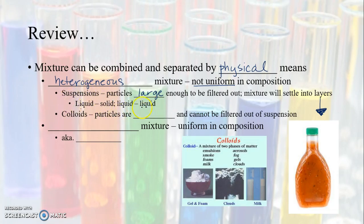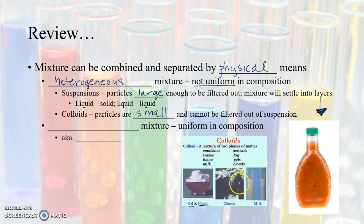In a suspension, you can have liquid-solid mixtures — a liquid with solid particles in it — or you can have a liquid with liquid in it, like oil and water. You can also have a colloid, where the particles are small and cannot be filtered out. Examples of colloids would be gels or foams — shaving gel, whipped cream, clouds, and milk.